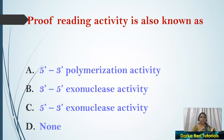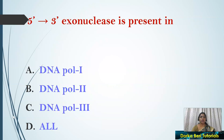Next question: Proofreading activity is also known as — options: 5' to 3' polymerization activity, 3' to 5' exonuclease activity, or none. The answer is 3' to 5' exonuclease activity. Proofreading is the removal of incorrect nucleotides during the replication process.